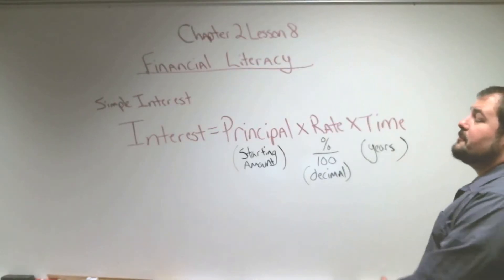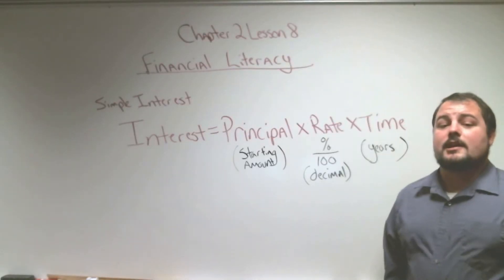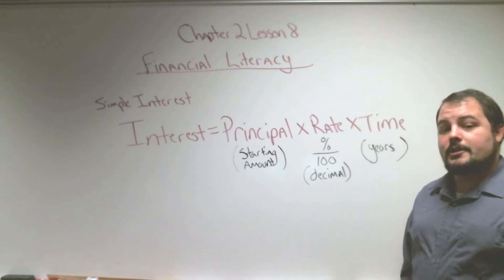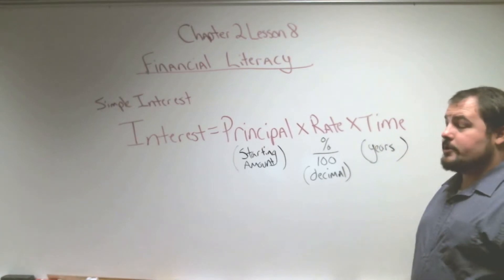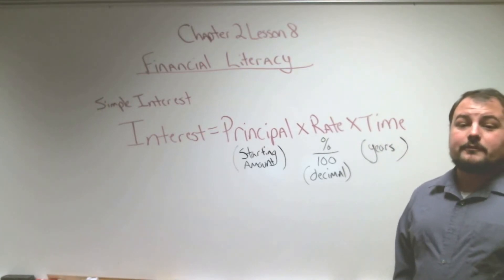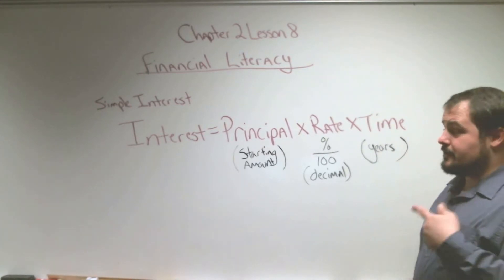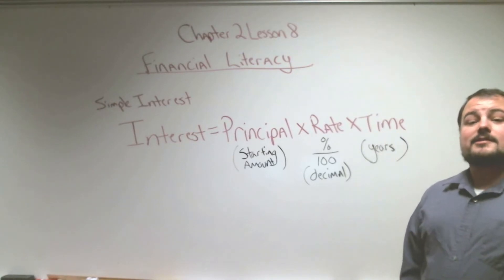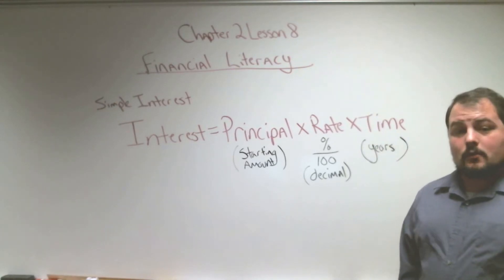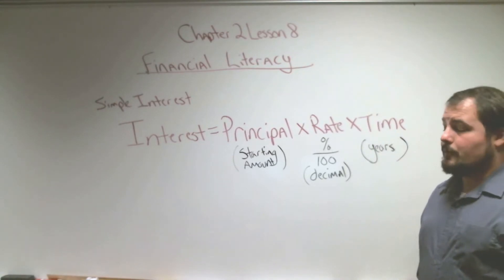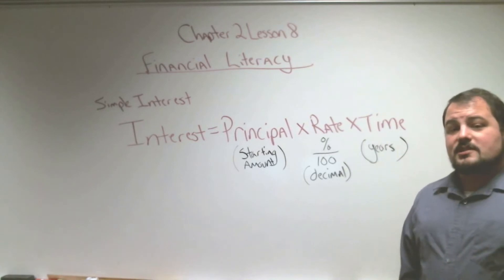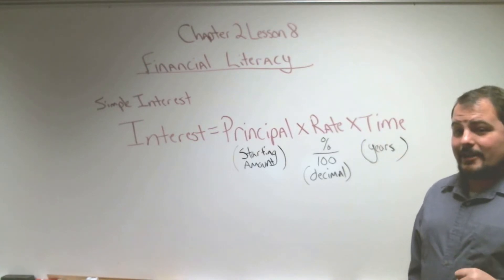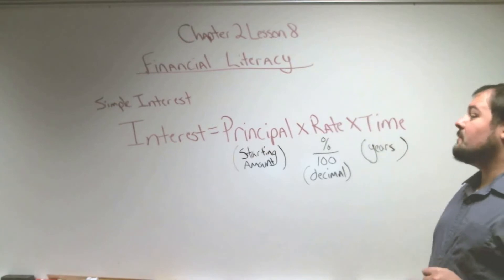Hey 7th graders, welcome to Chapter 2 Lesson 8. In this lesson we're going to be talking about financial literacy. The goal today is to be able to use the simple interest formula, which is this formula right here on the board. We're going to use the simple interest formula and we're going to have a goal of getting 80% of our questions done correctly.